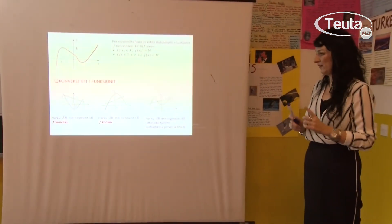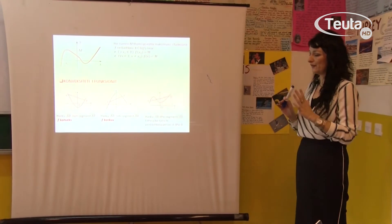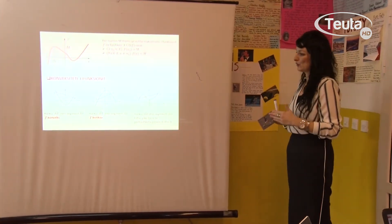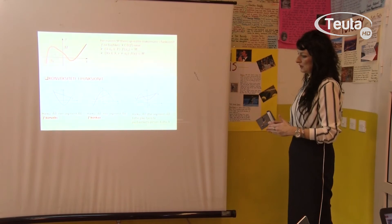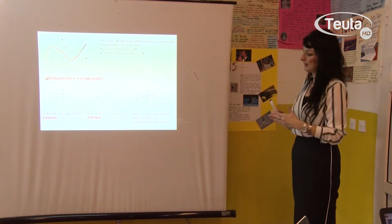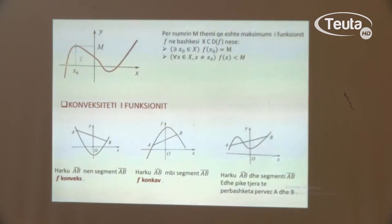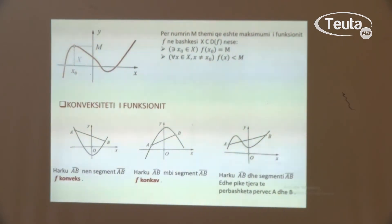Duhet të theksoj edhe njëherë, pra këto janë vetëm pamjet e këtyre vetive nga grafiku i funksionit — në tërësi do ti punojmë në vitin e 4. Këtu kemi edhe një grafik tjetër. Shikoni, nëse e presim me një drejtë, fitojmë segmentin AB, dhe ky është edhe konkav edhe konveks — pra në një interval, në pjesën e parë është konkav, në pjesën e dytë është konveks.